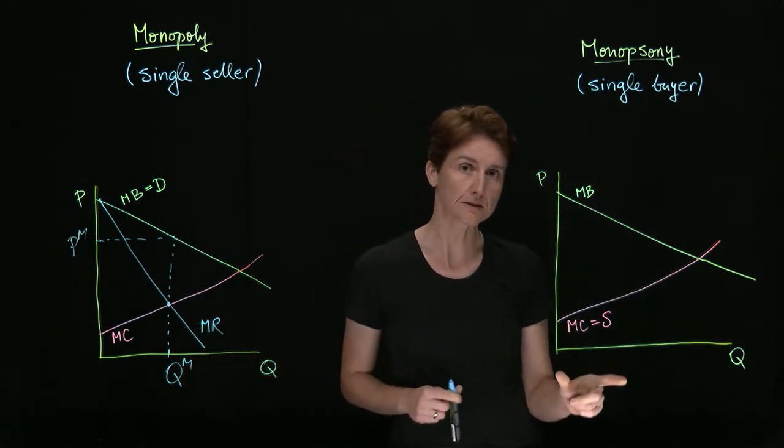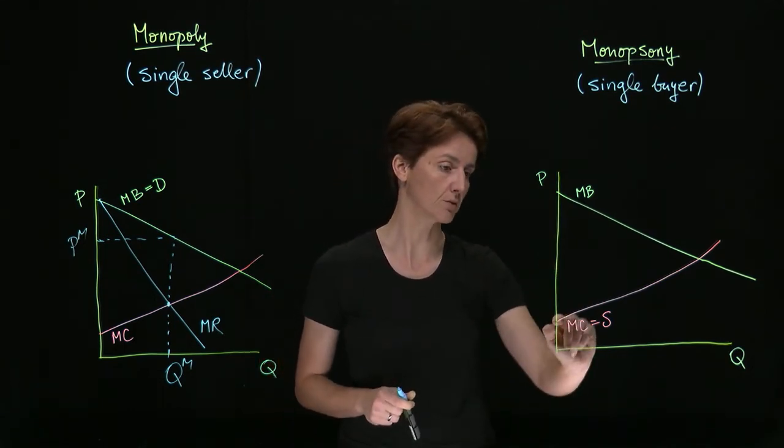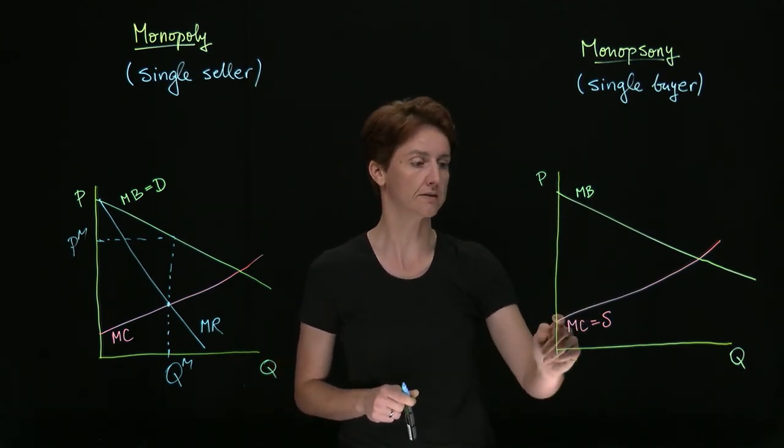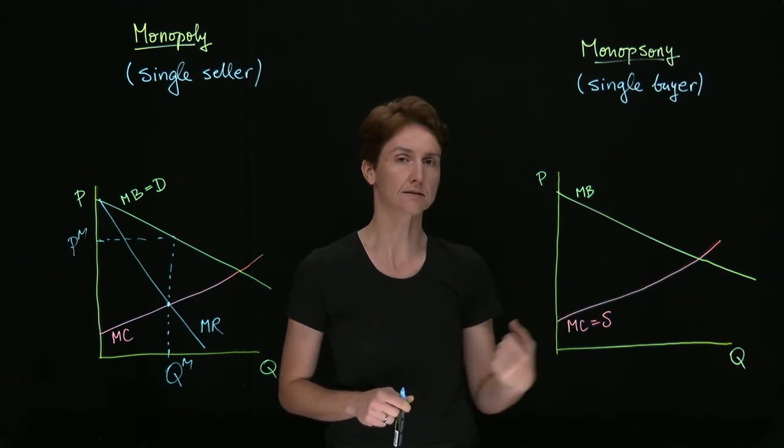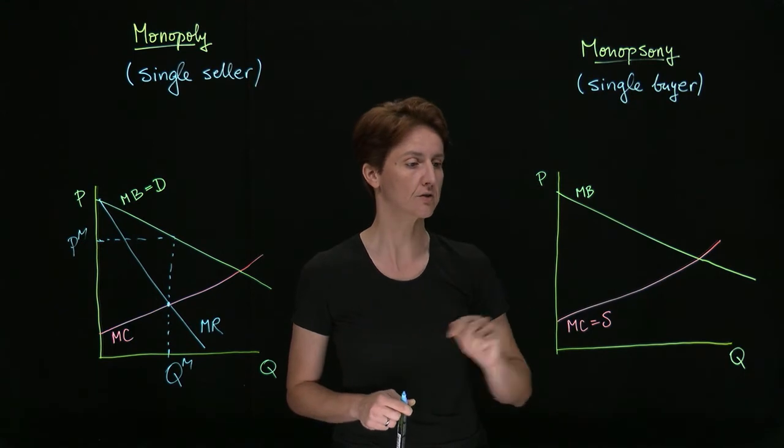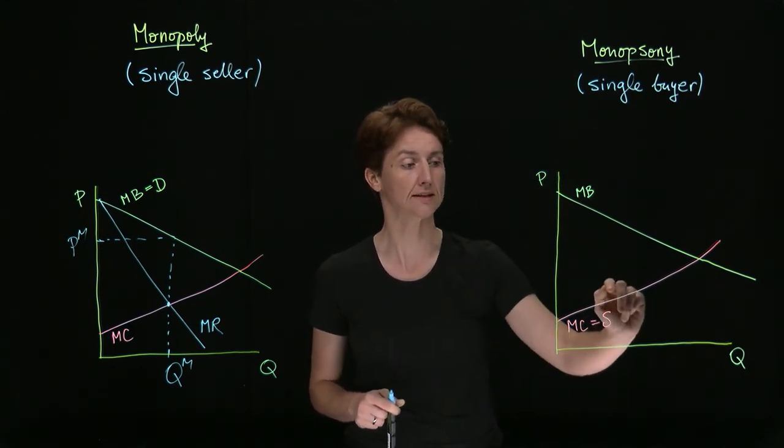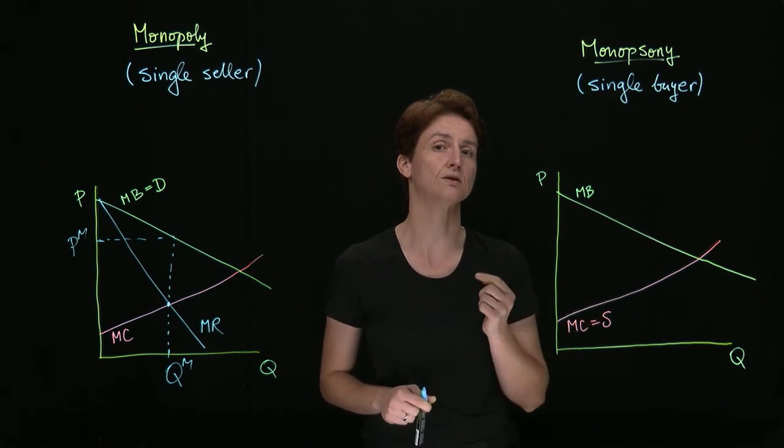On the monopsonist side, they will start by offering a very low price. At a very low price, very few units are supplied by the sellers in this market. As they want to buy an extra unit, they have to offer a higher price, not just for that next unit, but for all of the previous units as well.